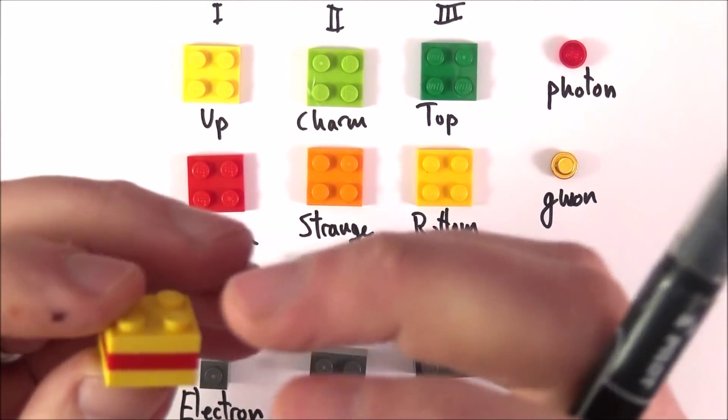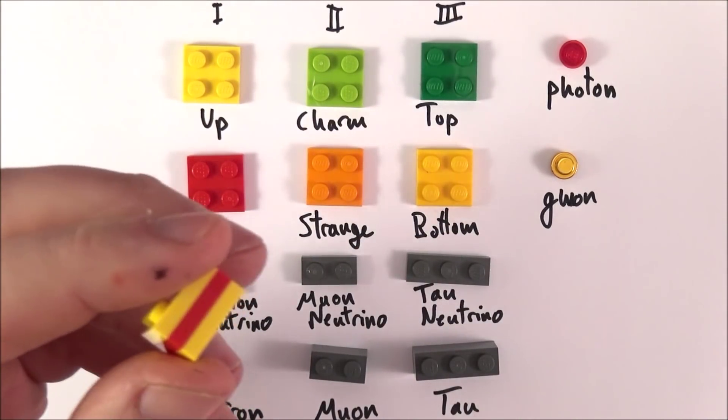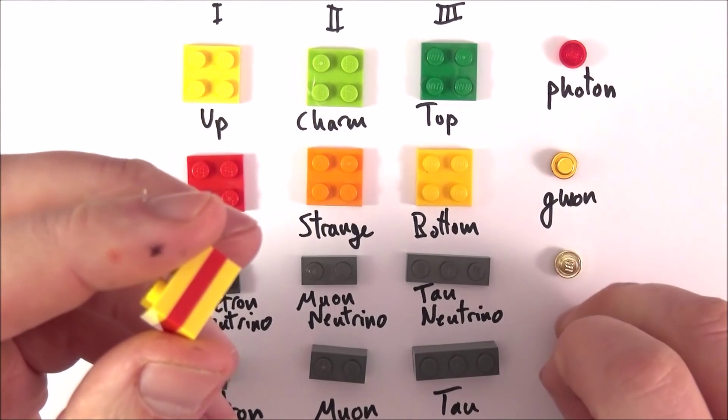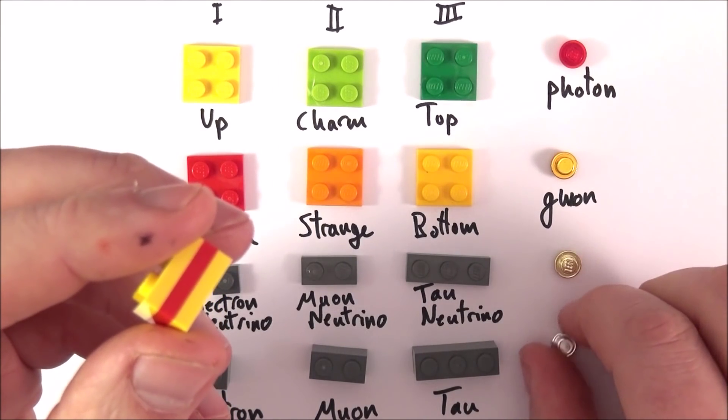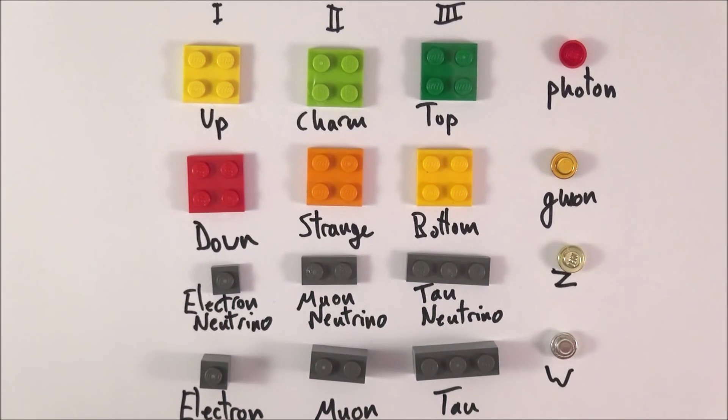This force is only very short range, and this is what we call the weak force. The weak force is carried by a couple of bosons. What we have here are the W and the Z. This kind of seemed to make sense.